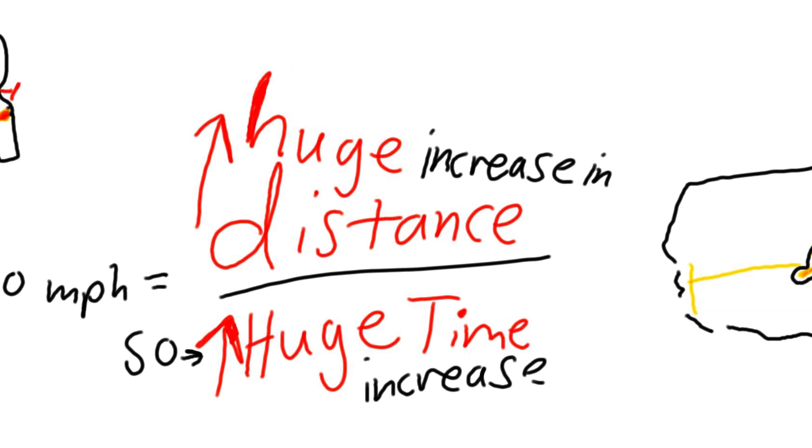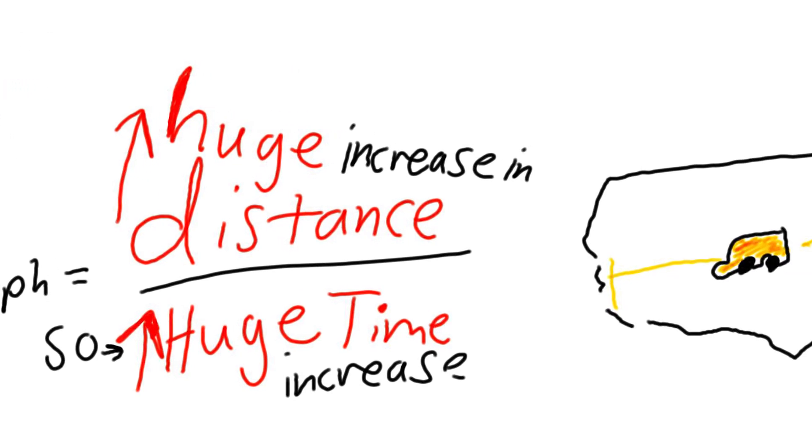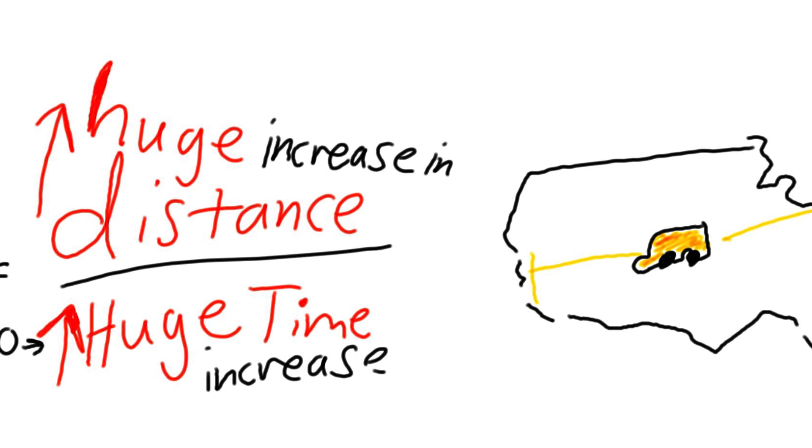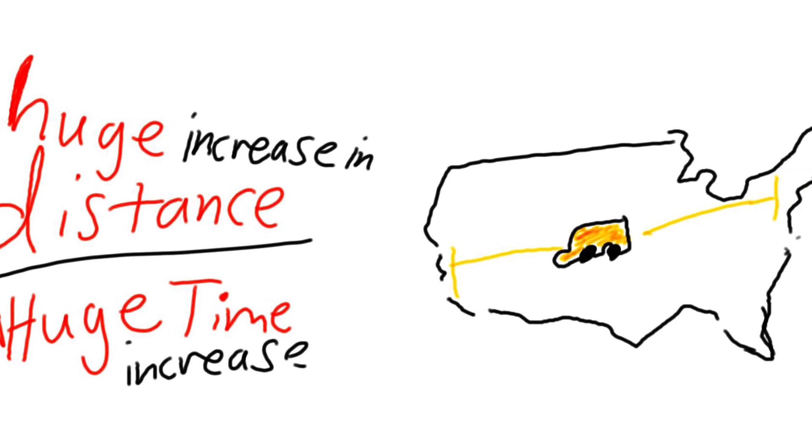So your car is still moving 120 miles per hour, but it's going to take a lot longer to drive from New York to California than it is to drive next door.